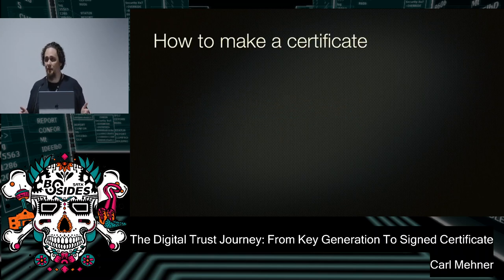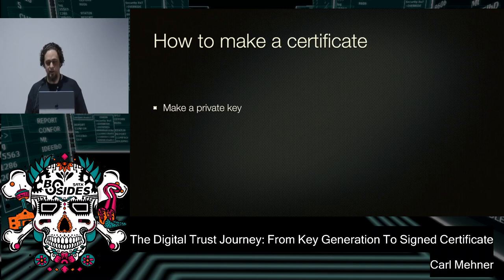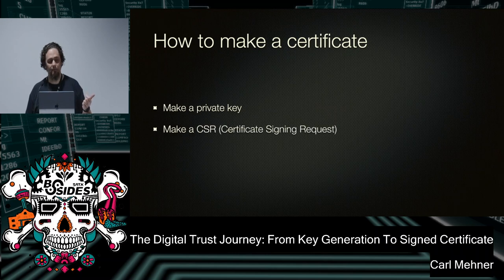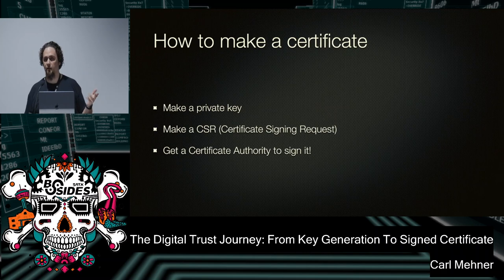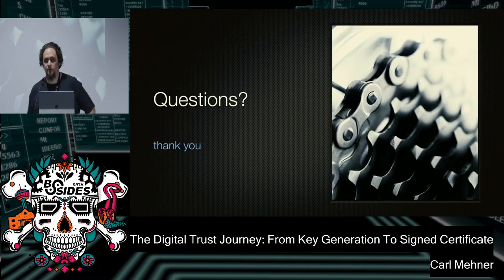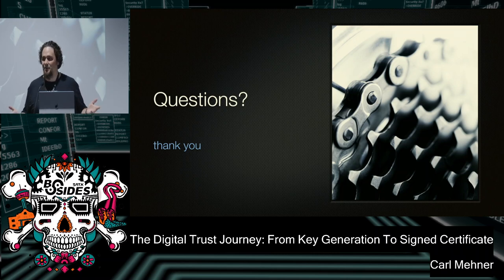So how to make a certificate — that's what this talk is about. And the good news is it's extremely simple. There's basically just three steps. First, you make a private key. You make a CSR. And you get a certificate authority to sign it. And that's pretty much it. Any questions?